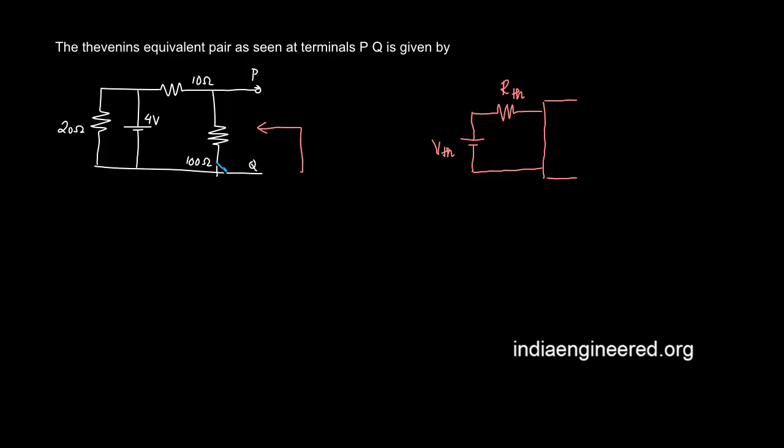Actually in the question it's not 100 ohm, it's 10 ohm. That will make the question a bit easier numerically. Now we will redraw the circuit as we have the 4 volt replaced by short circuit, the 10 ohm and the other 10 ohm.